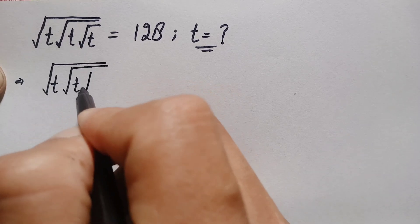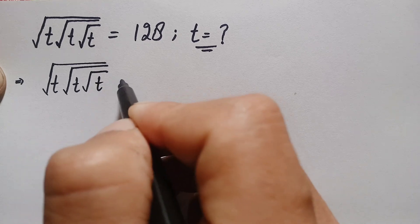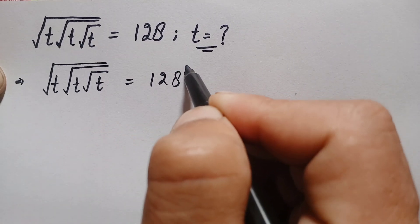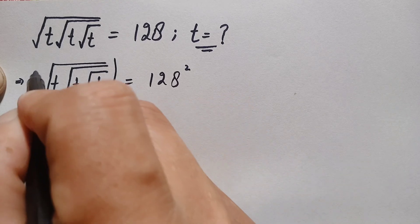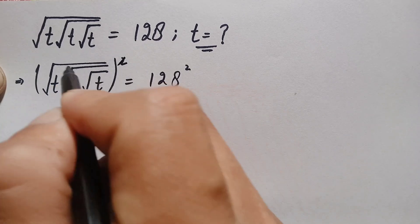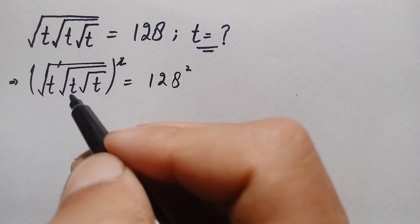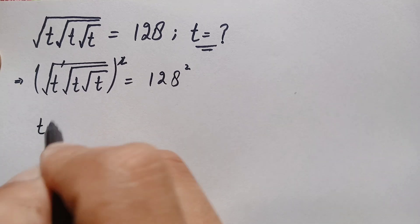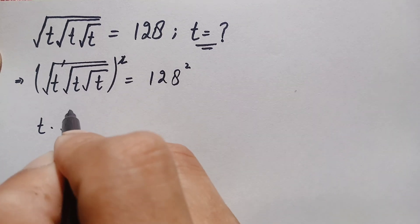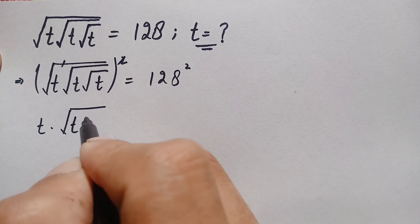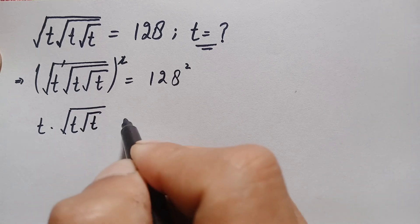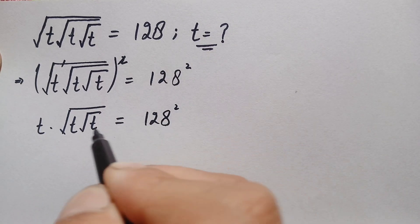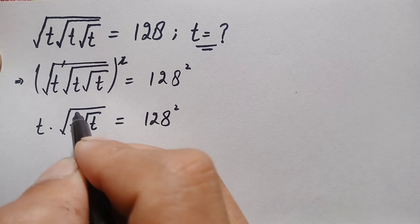Taking the square on both sides: the square and the outermost square root cancel, so this equation will become t times the square root of t, times the square root of t, is equal to 128 squared. Now we will try to eliminate the second square root.